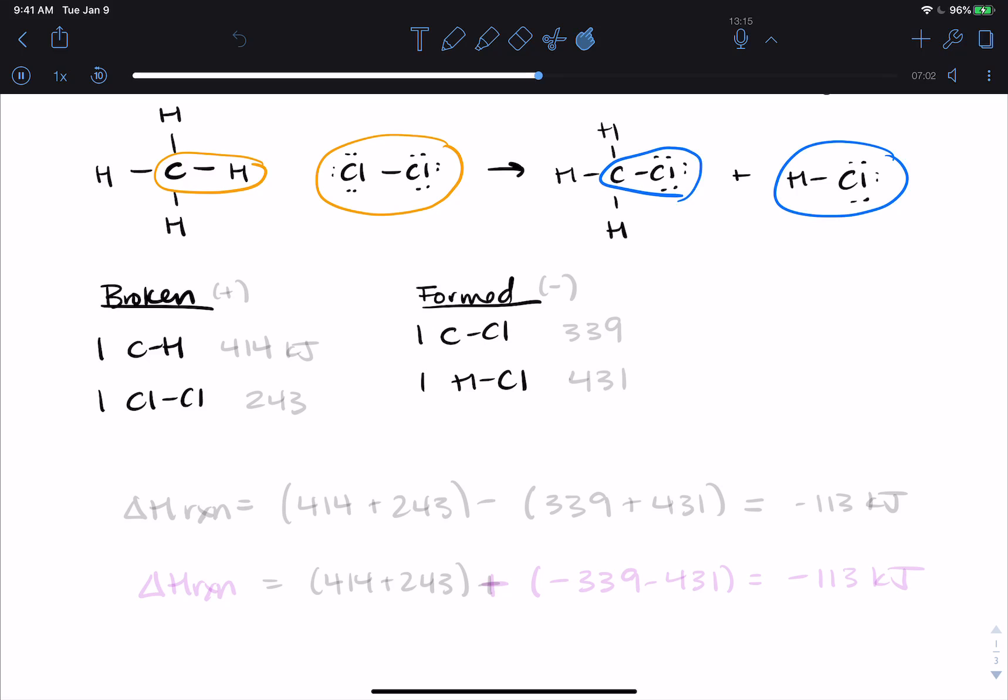Go to the table, go to the appendix, wherever you happen to have this data. You see that, I'm going to label this, all my broken ones is energy I have to put in. So for each carbon-hydrogen, it's 414 kilojoules. C-Cl is 243. Oh, that's Cl-Cl. C-Cl is 339. And H-Cl is 431.